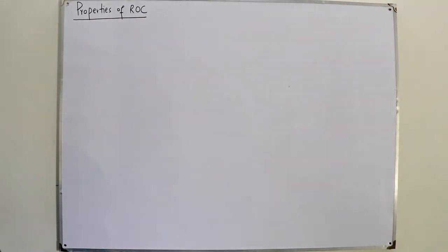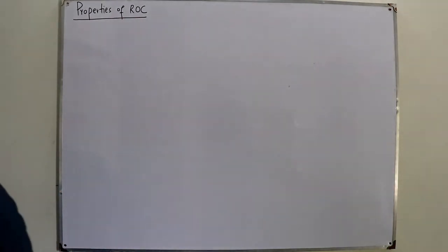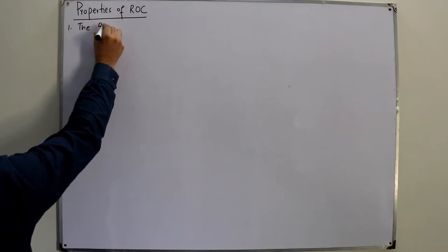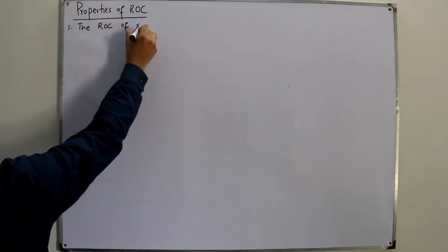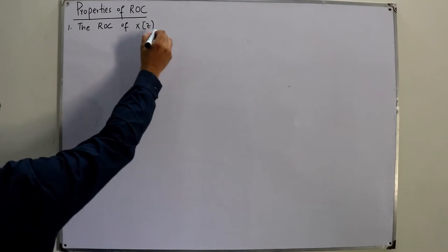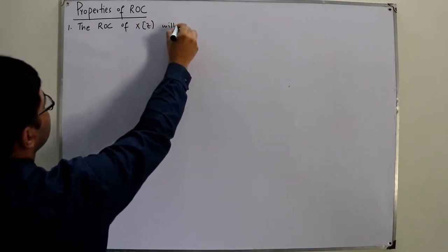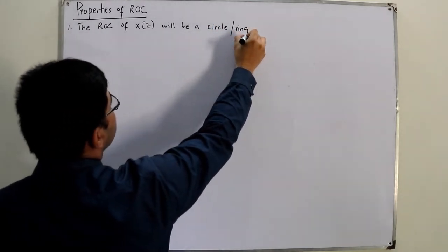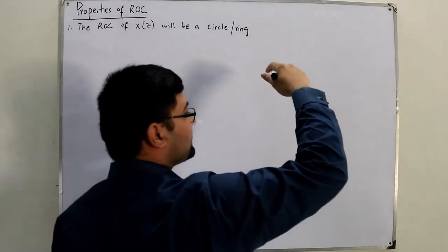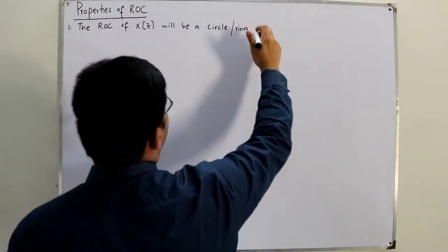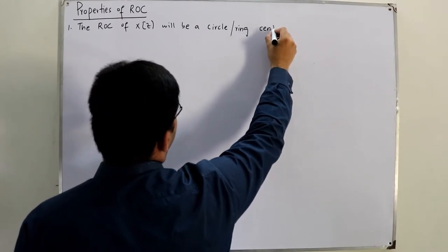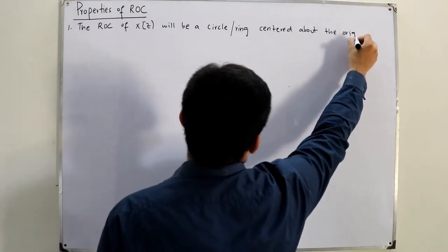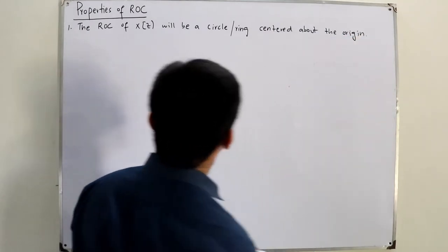The ROC of X(z) is a circle or a ring centered about the origin. This is the first property.